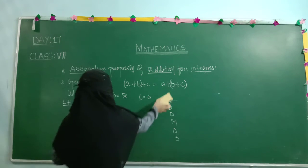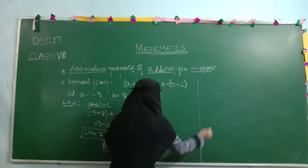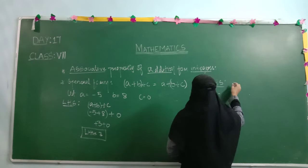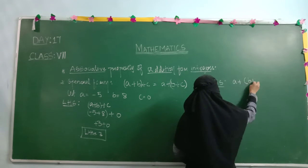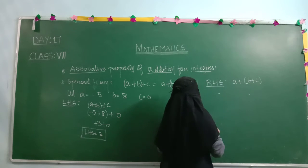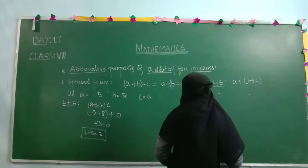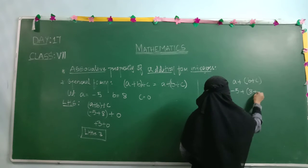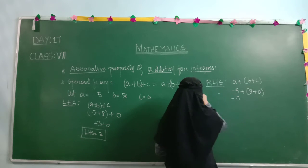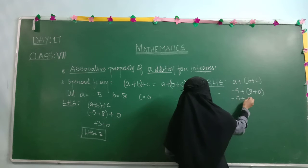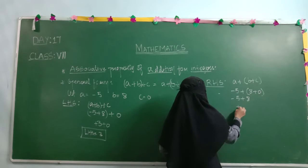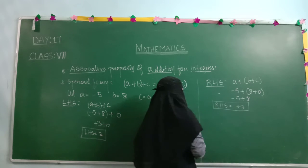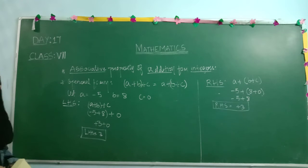Now we check the RHS — right hand side. The condition at RHS is: A plus of B plus C. Substituting: minus 5 plus, in bracket, 8 plus 0. First we solve the bracket: 8 plus 0 equals 8. Then minus 5 plus 8 gives plus 3. So RHS equals 3.